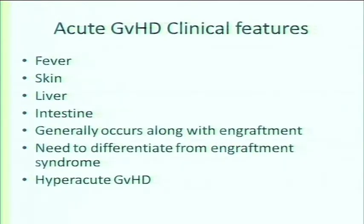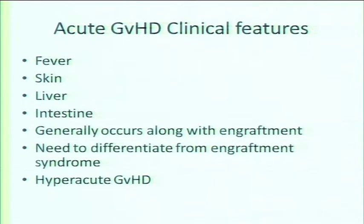The clinical features of acute GVHD include fever, and the main target organs are skin, liver, and intestine — most often affected when engraftment occurs. It can be difficult to distinguish between engraftment syndrome and early acute GVHD, as both can present with fever, redness, and diarrhea as the white cell count recovers. There is also hyperacute GVHD, where donor T cells start attacking recipient organs even before the graft has fully engrafted — bilirubin may rise before the graft has come in.